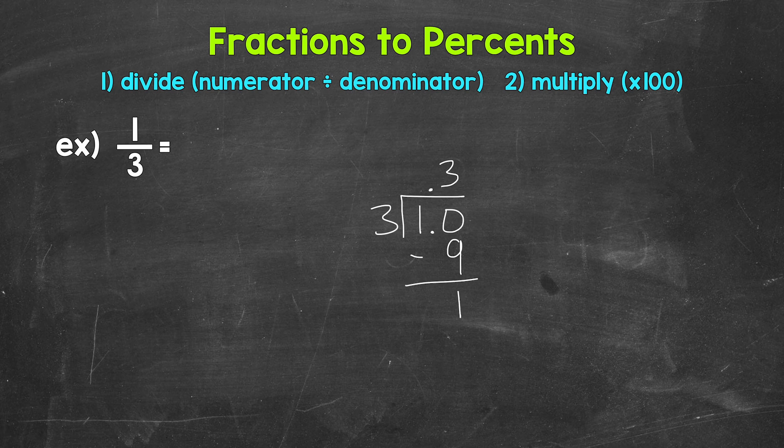Now we don't have a clean cut 0 there at the bottom. So we need to continue on by using another 0 that we can bring down. So we have 10 again. 10 divided by 3. How many whole groups of 3 in 10? Well, 3. Let me extend this division bar here. So we put 3 up here. Multiply. 3 times 3 is 9. Subtract. 10 minus 9 is 1.